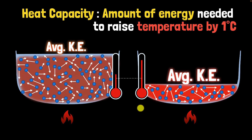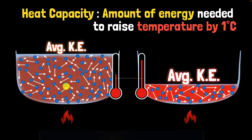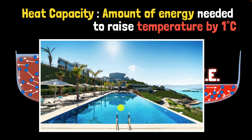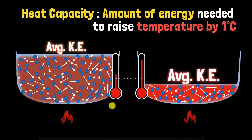This brings up another question: is heat capacity an intrinsic or an extrinsic property? Heat capacity depends on the mass — if you have more mass, it takes more energy to raise the temperature by one degree Celsius. Think about a swimming pool: it would take a lot more energy to raise its temperature by one degree Celsius. So clearly, heat capacity depends on the amount of substance, and therefore it's an extrinsic quantity.